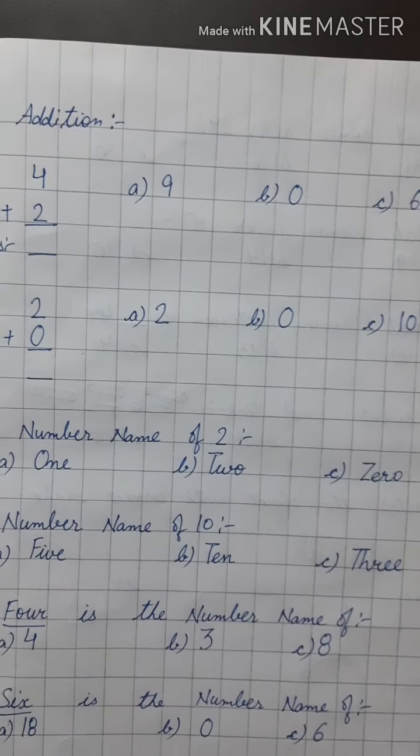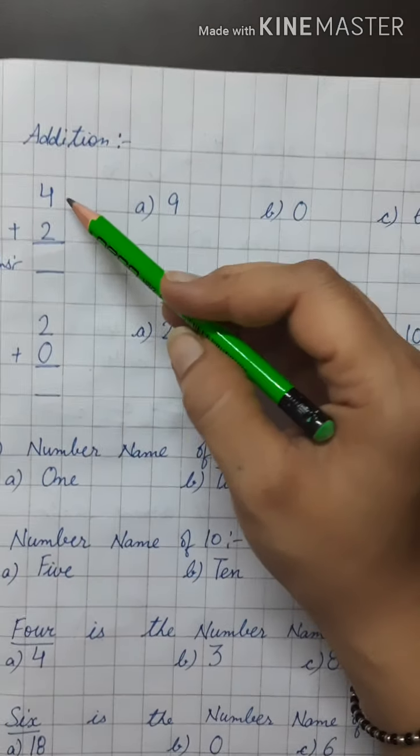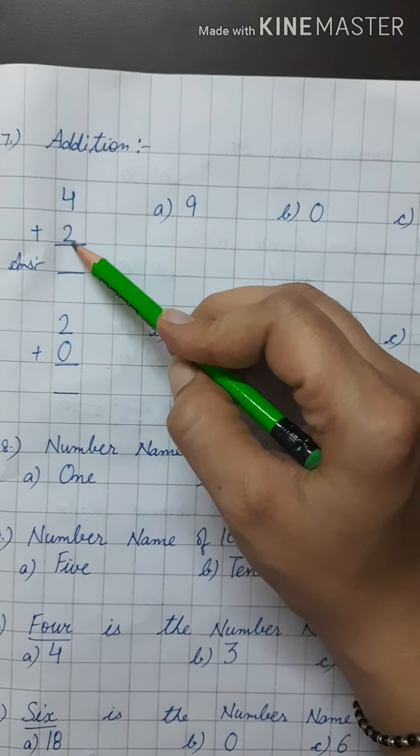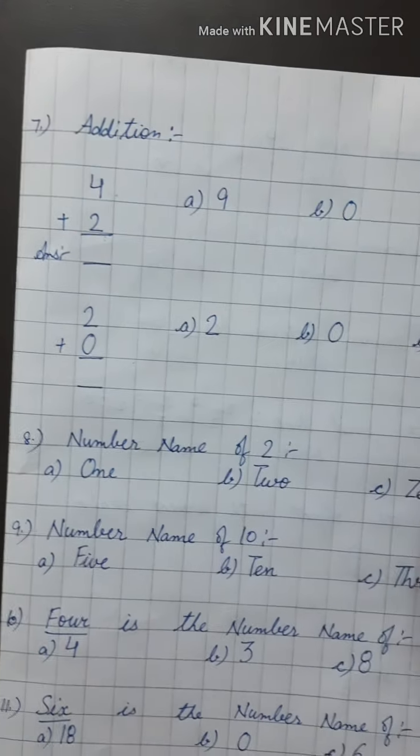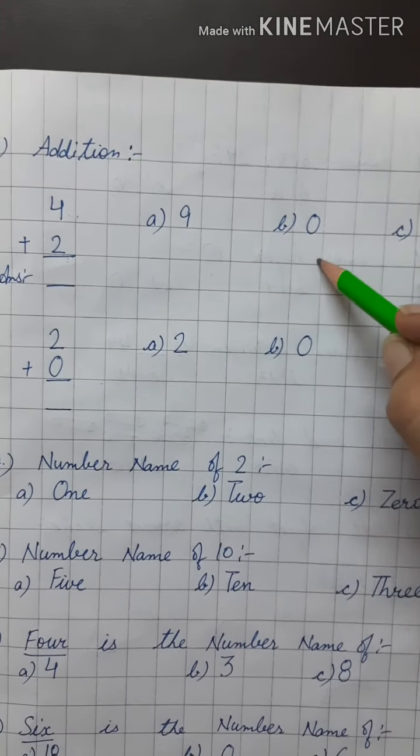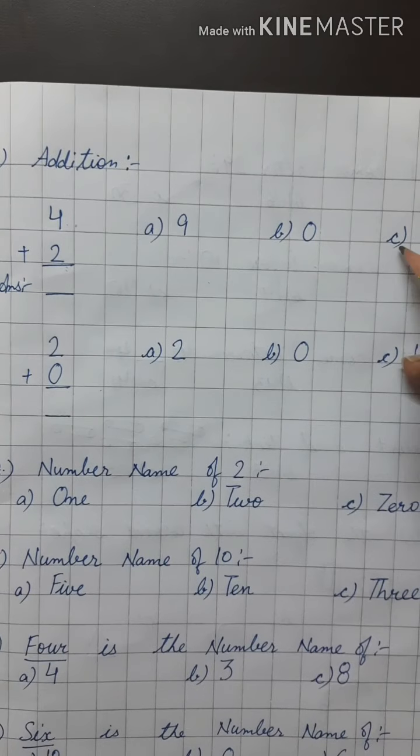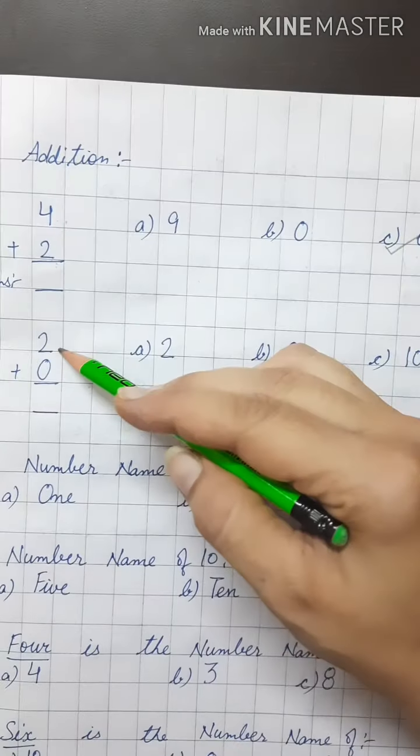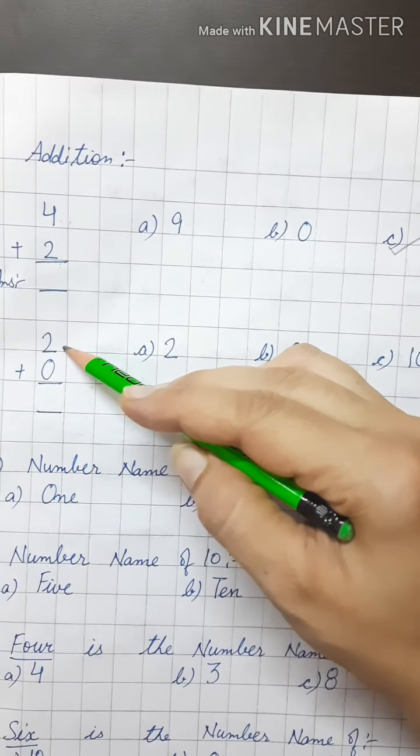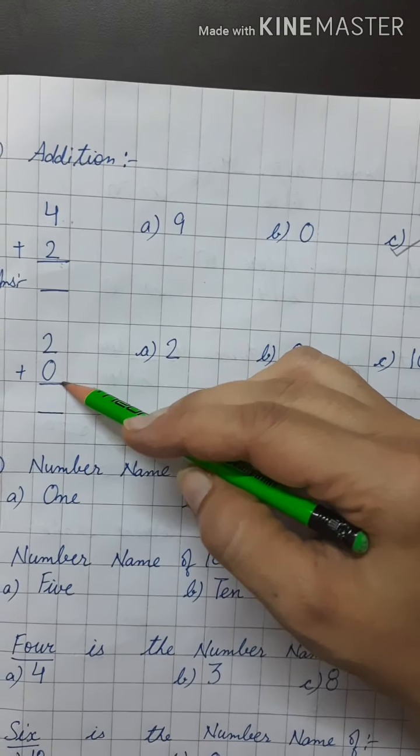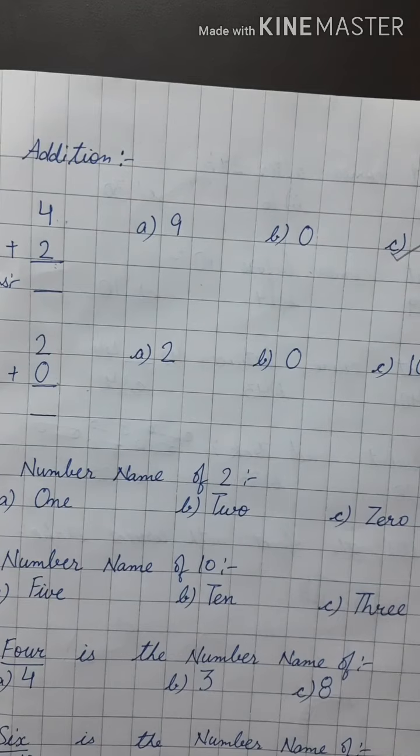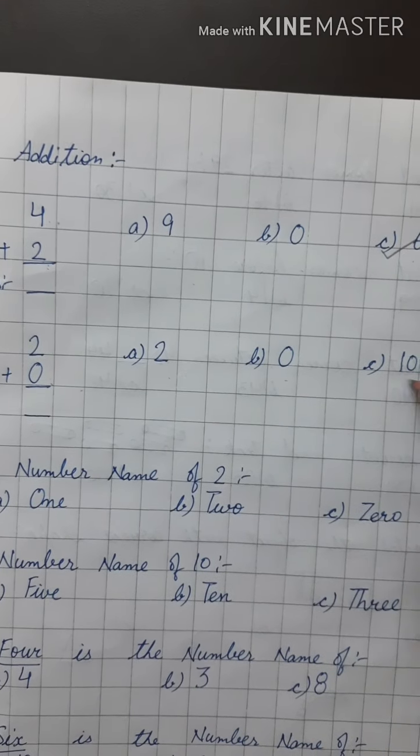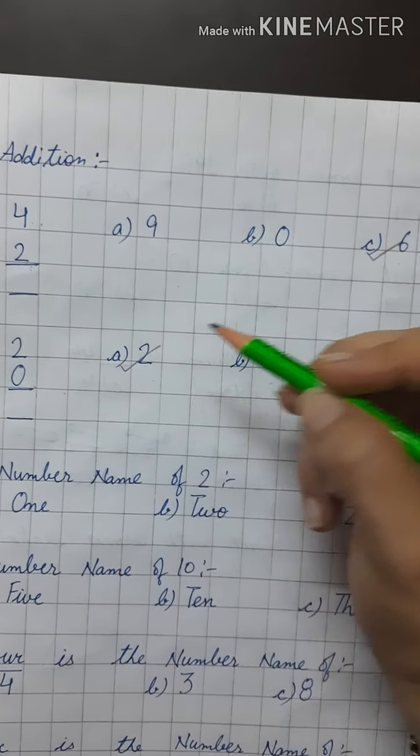Now, next question is addition. 4 and 2. Add 4 and 2. And the answer will be 9, 0 or 6? 6. Answer will be 6. Add 0 in number 2. Add 2 and 0 together. What will be the answer? 2, 0 or 10? It is 2.